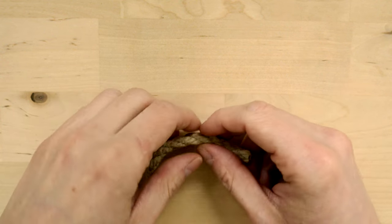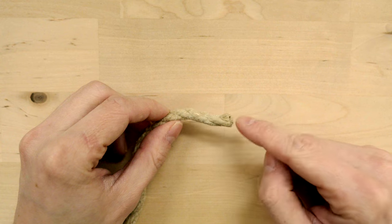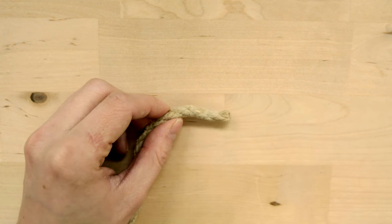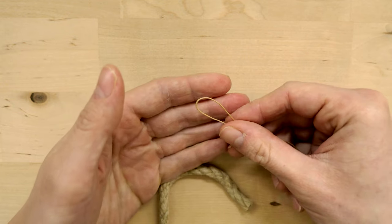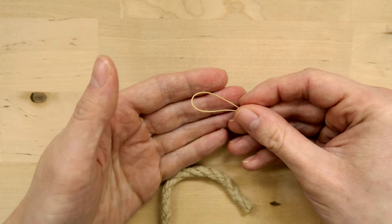The first thing you're going to need is some rope. I'm using some hemp rope here. And the other item that you're going to need is some thread or cord that we're going to use for the actual whipping.